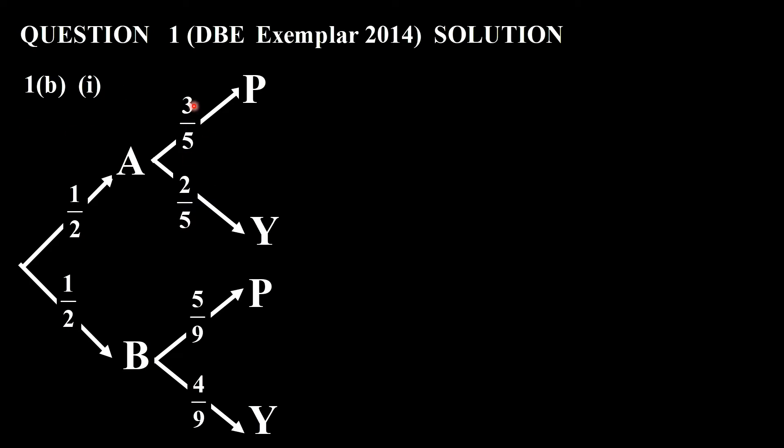As you can see, the sum of the probability is 3 over 5 plus 2 over 5 is 1, 5 over 9 plus 4 over 9 is 1. Let's write down the outcomes that I can get: A and P and that's the outcome A and Y. Then I can get B and P and I can get B and Y. So there we represent that as a tree diagram.